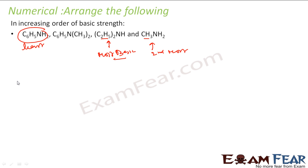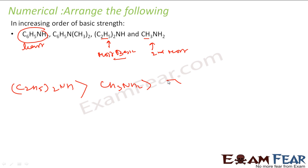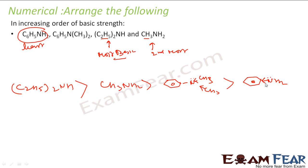The one with two ethyl groups is most basic, and the one with one ethyl group is second most basic, making the N(CH3)2 compound third. The least basic is the aniline (C6H5NH2). This is because the benzene ring withdraws electrons from nitrogen, while CH3 or C2H5 alkyl groups donate electrons to nitrogen, increasing its basicity. Two C2H5 groups donate the most electrons.